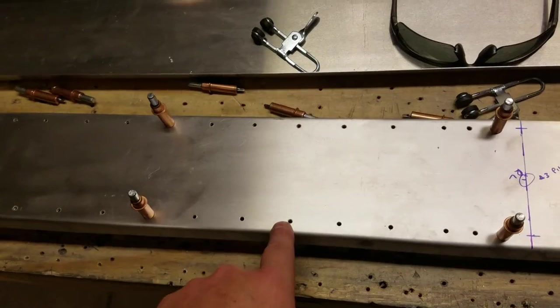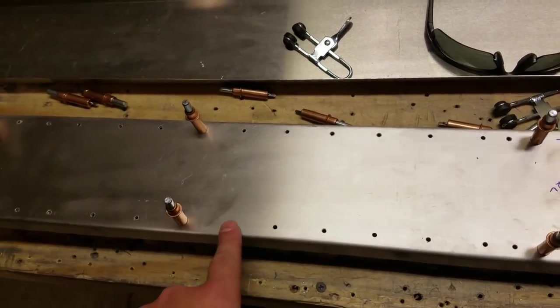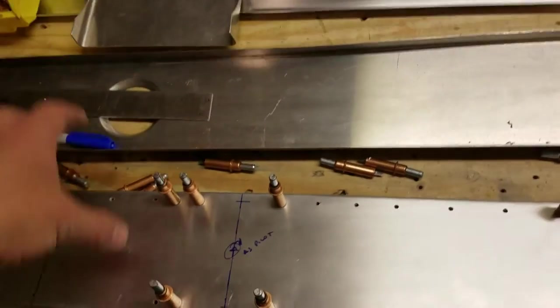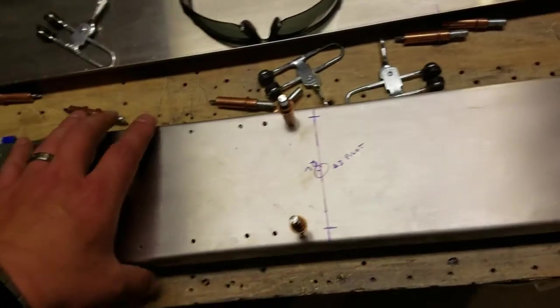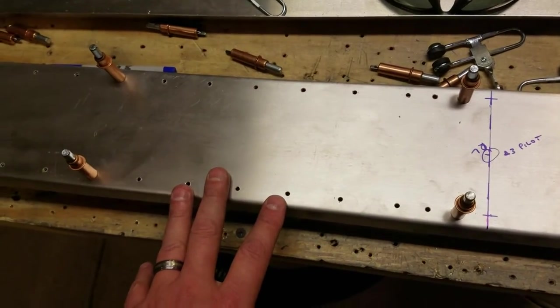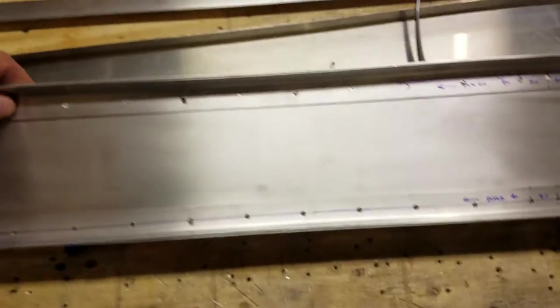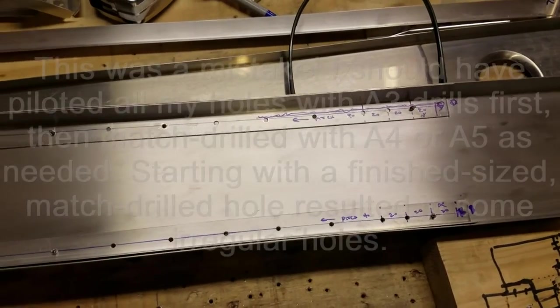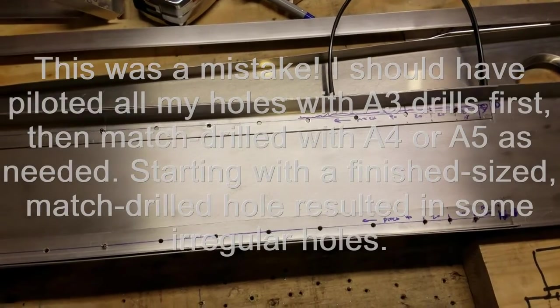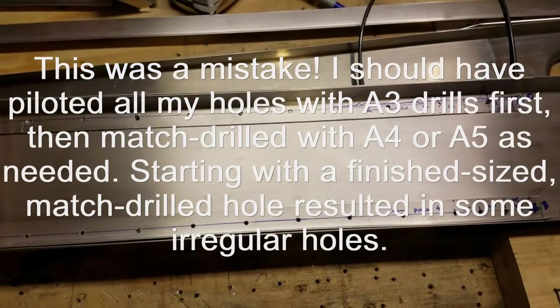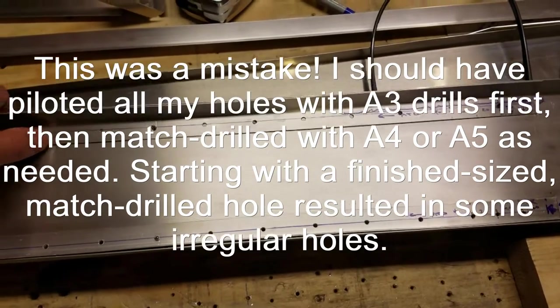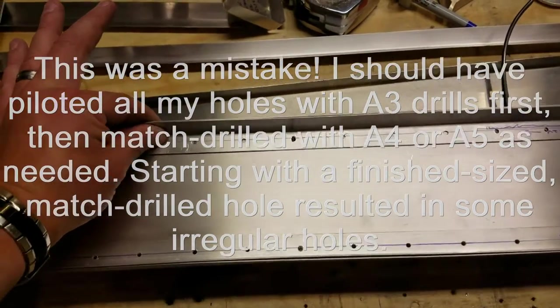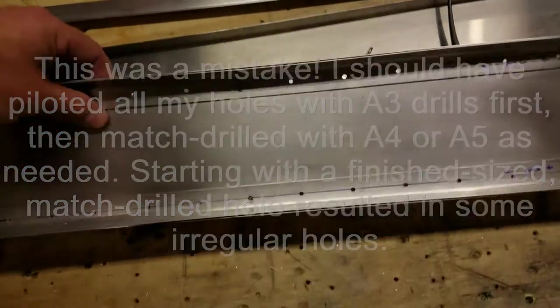The spar itself with the doublers gets match drilled for A4 rivets all the way down the length except for where you end up with brackets that attach with A5 rivets. Because I can perfectly clamp the doublers into place on the back side, I match drilled those with the very first hole. I didn't bother with an A3 hole and then re-drill it. There was no reason to do that because there's nothing to line up.